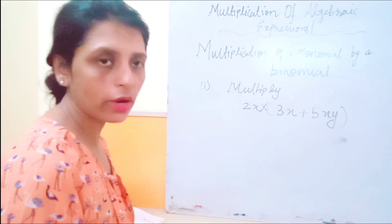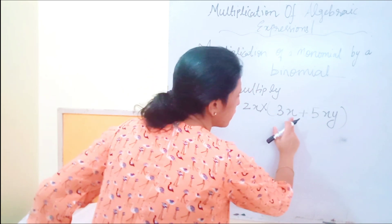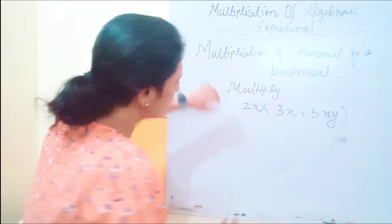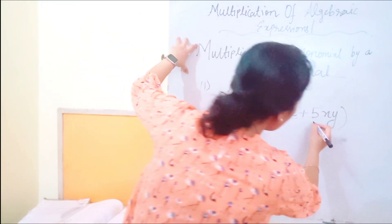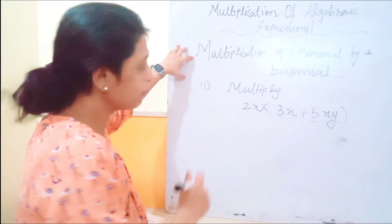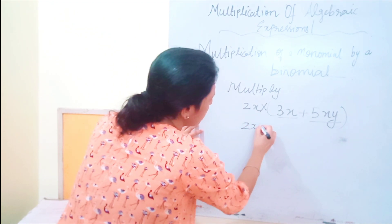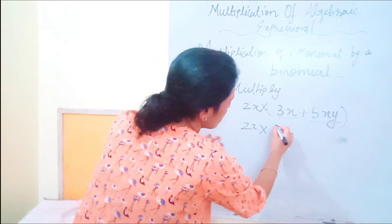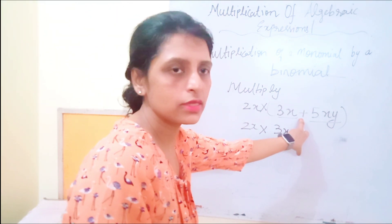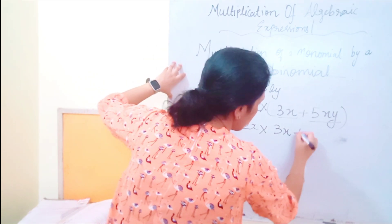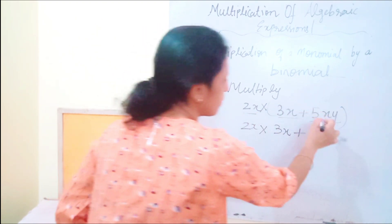2x multiplied by the bracket 3x plus 5xy means 2x will be multiplied with 3x and also with 5xy. The sign between them is addition, so the addition sign will be kept. Now 2x multiplied by 3x, then plus 2x multiplied by 5xy.